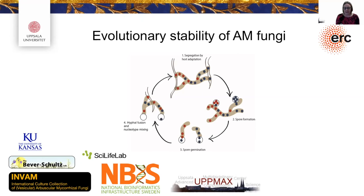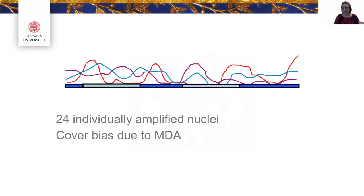We had already done pilot experiments showing we could sort the nuclei and amplify them, and I kind of thought that would be the hard part. But it turns out that when you get the sequences, it's very easy to assemble something that looks like a genome — actually making sure the assembly is a good representation of the genome is a whole different thing. So we spent a lot of time figuring out how to handle this kind of data.